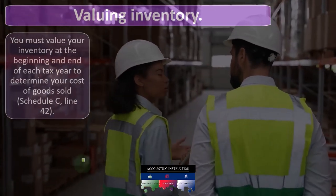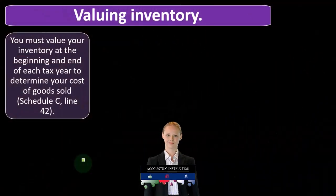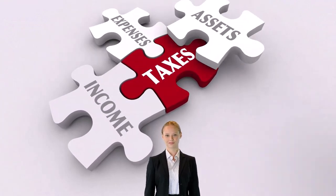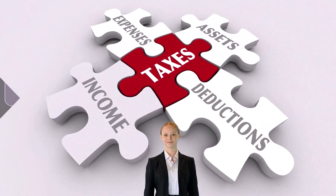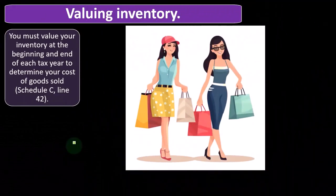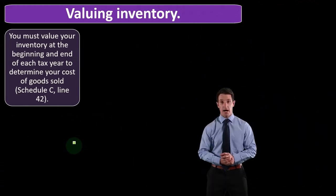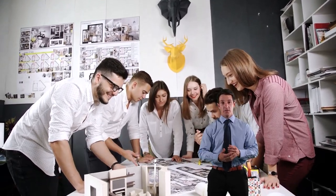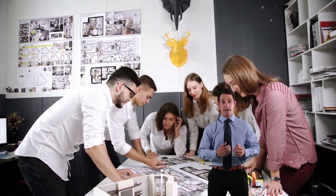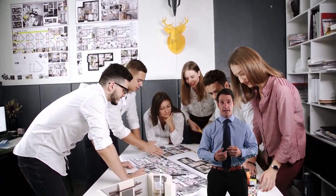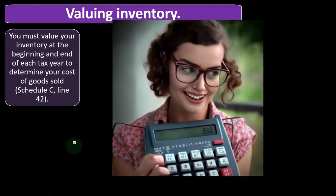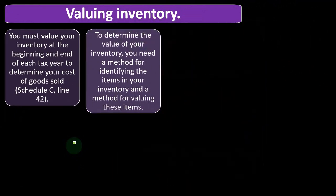Our beginning inventory should match what was the ending inventory in the prior tax return, if we had a prior tax return for the business. If it's not a new business, we're going to have to have the purchases — which might be the area you back into using algebra — minus the ending inventory, determined by a physical count and accounting records, equals cost of goods sold. If you're using a perpetual inventory system, you may already have cost of goods sold calculated, which means you can back into purchases if needed.